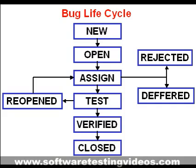In software development process, the bug has a life cycle. The bug should go through the life cycle to be closed. A specific life cycle ensures that the process is standardized. The bug attains different states in the life cycle.